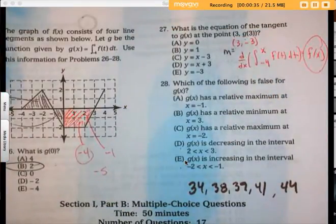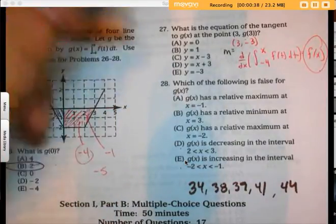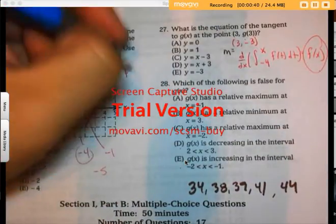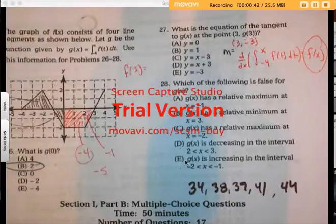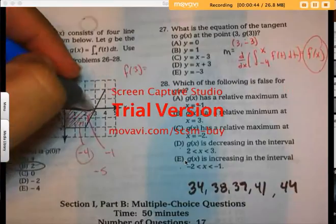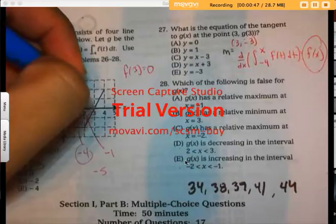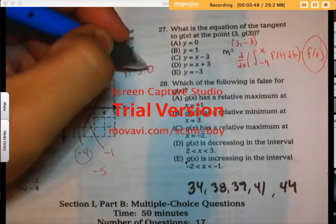I need the slope at 3, so what is f(3)? Let's see... that's 0. The point at this function f at 3 is 0.